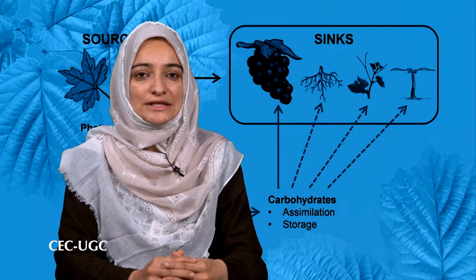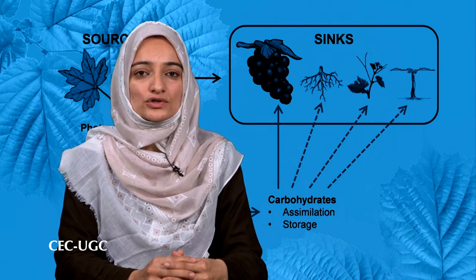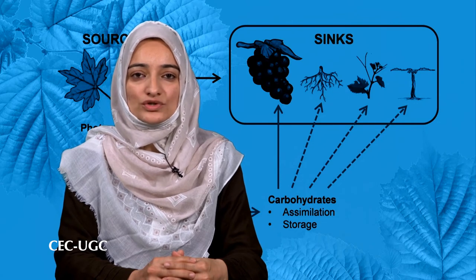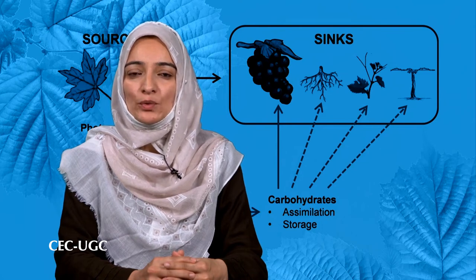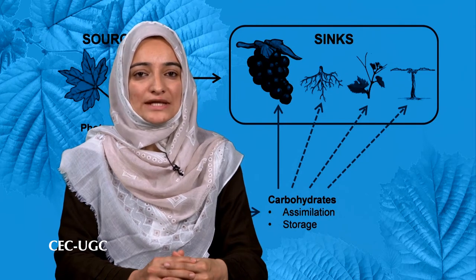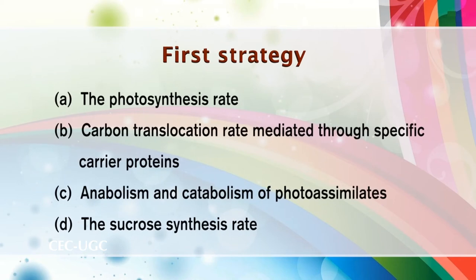The first strategy is to enhance the capacity of the source, like the carbon export rate. Many potential targets have been proposed for improvement of source capacity: the photosynthesis rate, carbon translocation rate mediated through specific carrier proteins, anabolism and catabolism of photoassimilates, and the sucrose synthesis rate.